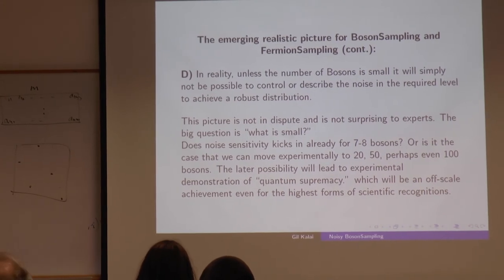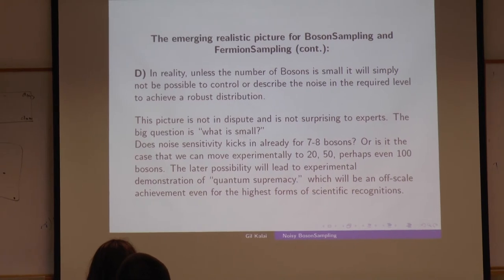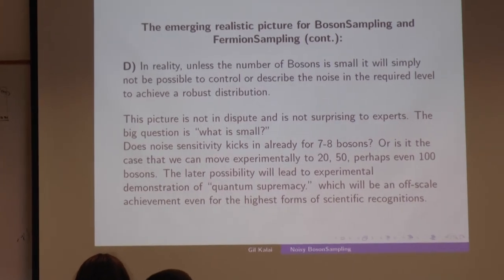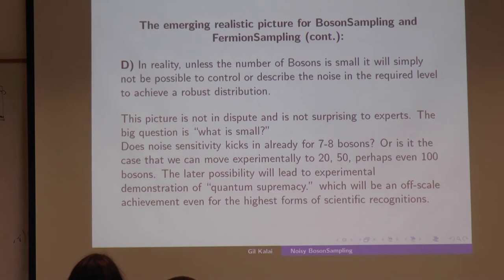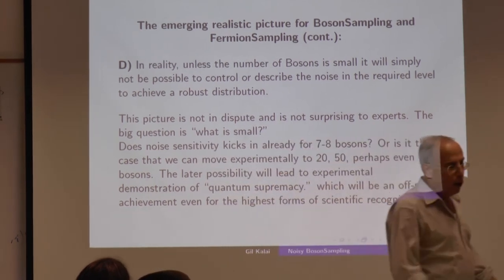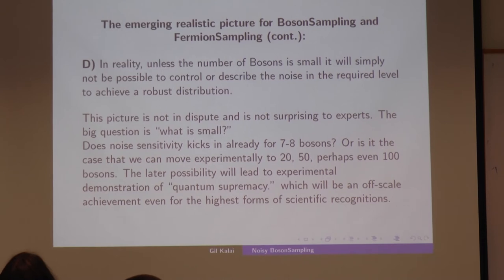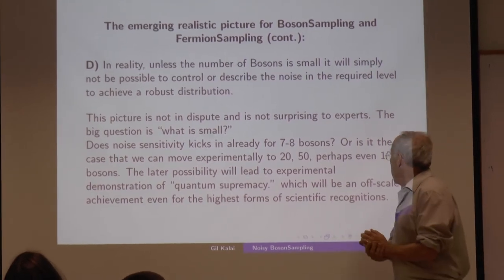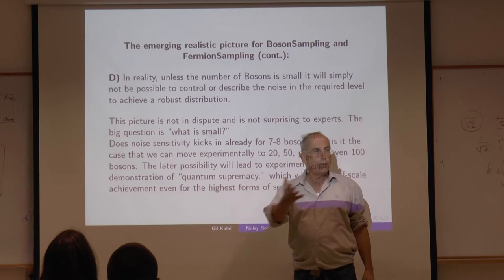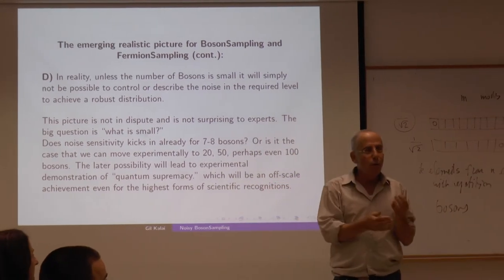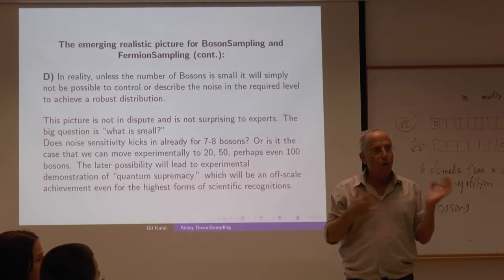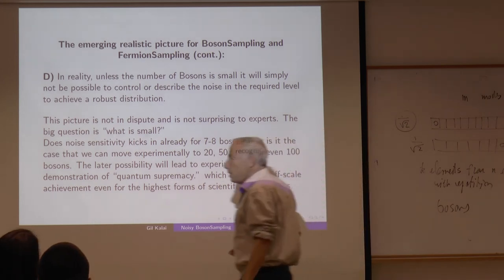This picture is not very controversial and not surprising to experts. The big question is: what is 'small'? Does noise sensitivity kick in already for seven or eight bosons, or will you need 20, 50, or 100 bosons? If noise sensitivity does not kick in when you try to control 50 bosons, then this will be an experimental demonstration of quantum supremacy — an off-scale achievement. If it kicks in at eight, it won't work.